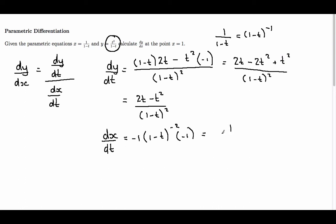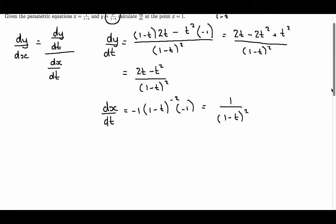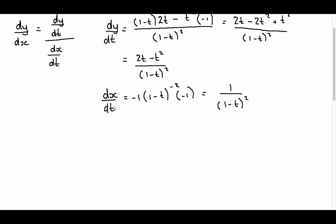So dx/dt is 1 over (1 minus t) squared. Now I have dy/dt and dx/dt, so I can find dy/dx.